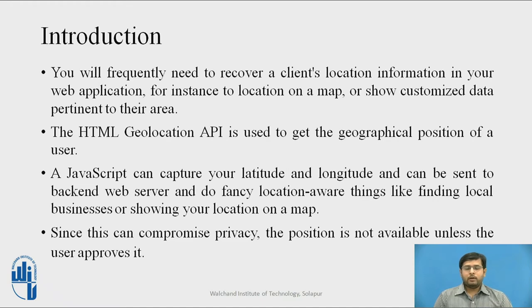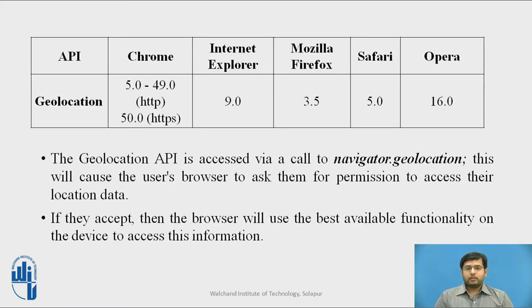These are some browsers that provide the geolocation API. Chrome provides the geolocation API from its version 5.0 onwards. Only the current version 50.0 provides the geolocation API to HTTPS services, so it does not give your location if the services or the access is not through HTTPS, that is secure browsing. Internet Explorer from 9.0, Mozilla Firefox from 3.5 onwards, Safari browser from 5 onwards, and Opera from 16 onwards.